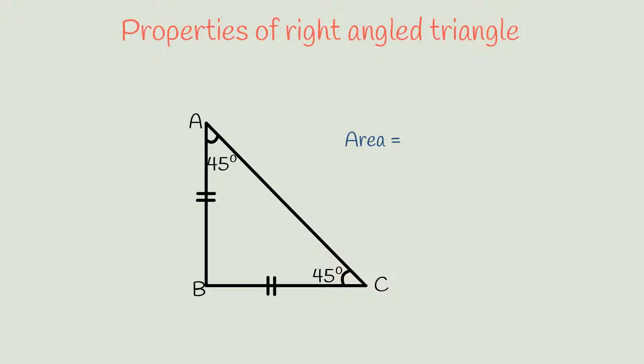Area of a right angle triangle is half the product of the sides containing the right angle.